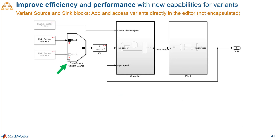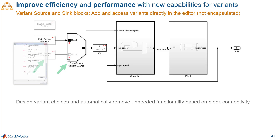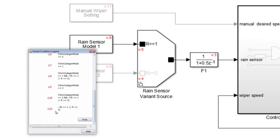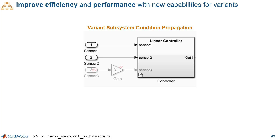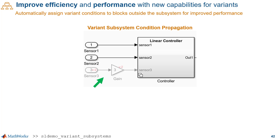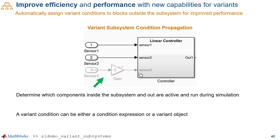One benefit of the variant source and sync blocks is that you no longer have to encapsulate variability in a variant subsystem — you can have it directly in the editor, and Simulink automatically comments out inactive functionality. Variant annotations and the variant condition legend help you understand how conditions are propagating. You can generate code for either the active variant choice to inline the design, or generate preprocessor conditionals so the active variant is selected at compile time. The next enhancement is the assignment of variant conditions to blocks connecting to variant subsystems — whatever is not active gets commented out if you choose, which can yield performance gains.